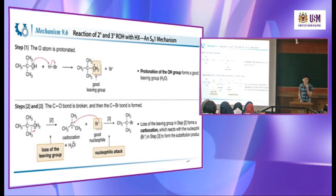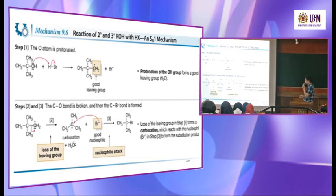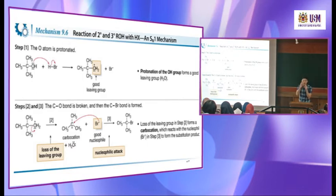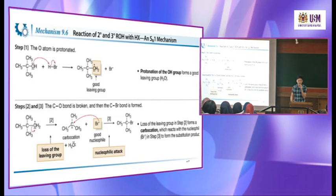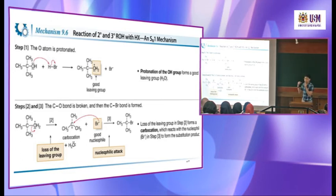Once the carbocation is formed — and this carbocation formation is the rate-determining step — that's why we call it a unimolecular reaction. Then bromide as a nucleophile attacks the carbon and you get the product. The only difference between SN1 and SN2: SN2 involves two species in the rate-determining step; SN1 involves only one — normally a carbocation must form first, then the nucleophile attacks. This was covered in Chapter 7.